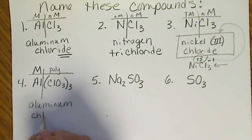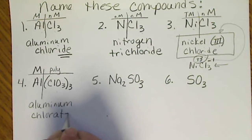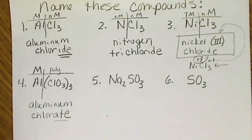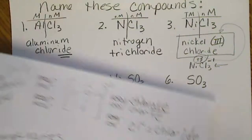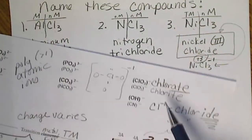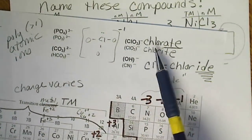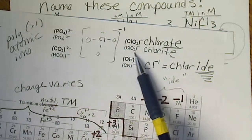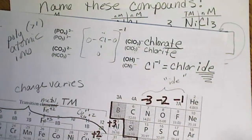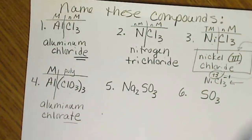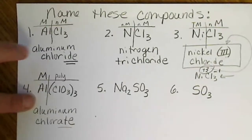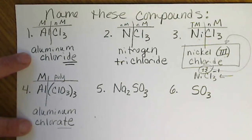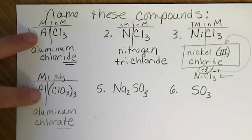I told you I would give you the -ates on a test. This is chlorate. If we look back at our polyatomic list, chlorate is the one in bold. Chlorite is the one that's got one less oxygen. So aluminum chloride and aluminum chlorate sound very similar, but they're two very different compounds.